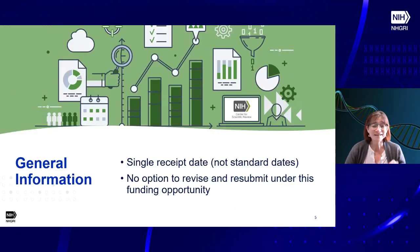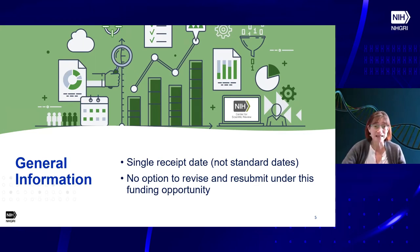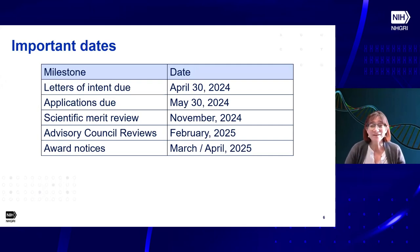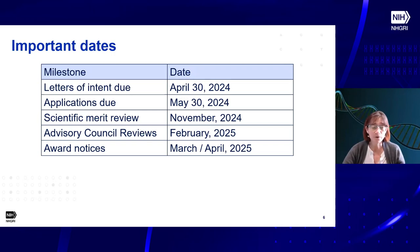There is just a single receipt date, and these are not the standard receipt dates — they are special for this funding opportunity. There will be no option to revise and resubmit since it is a single receipt date. Letters of intent are due by April 30th — we're accepting them at any time but would like to receive them by then. Applications are due by May 30th. Scientific Merit Review will occur approximately in November 2024, Advisory Council Reviews in February 2025, and award notices are expected to go out around March or April 2025.